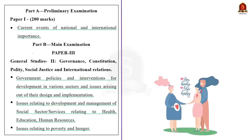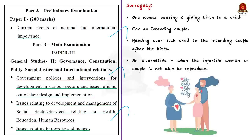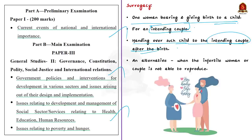Before we go through the important provisions mentioned in the article, the syllabus relevant to this news article is highlighted on screen for reference. First of all, what is surrogacy? Surrogacy refers to the practice of one woman bearing and giving birth to a child for an intending couple, with the intention of handing over such child to the couple after the birth. In simple terms, surrogacy refers to a contract in which a woman carries a pregnancy for another couple.